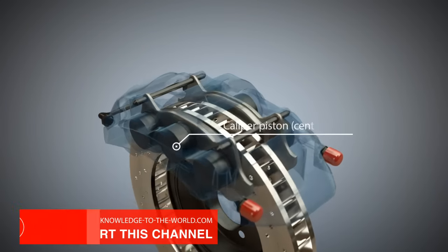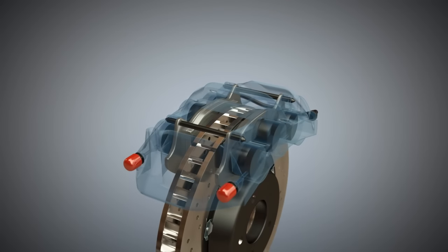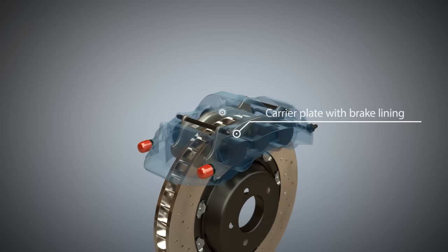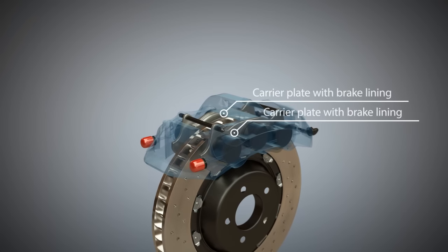Caliper pistons are made of gray cast-iron, steel, aluminum alloys, or plastics. Brake pads are located on both sides.